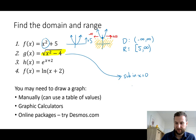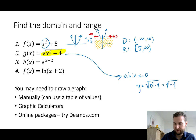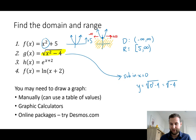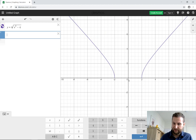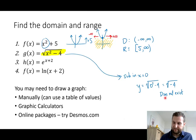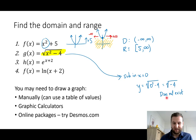Square root functions in the real numbers must always be positive, so √(-4) does not exist. The entire region from -2 to +2 is excluded. In the complex number system you could find the square root of a negative number using imaginary numbers, but we won't get into that here.